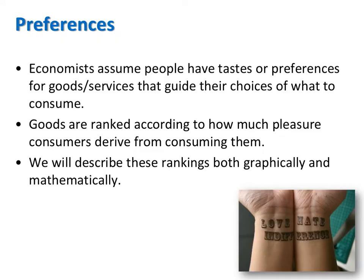How might we quantify these tastes and preferences? Well, one way is in monetary terms — what a good is worth to someone is the highest price they're willing to pay for it. Another way to quantify preferences is through rankings, and that's the way we're going to use in Econ 410. Goods are going to be ranked according to how much pleasure consumers derive from consuming them, described both graphically and mathematically.